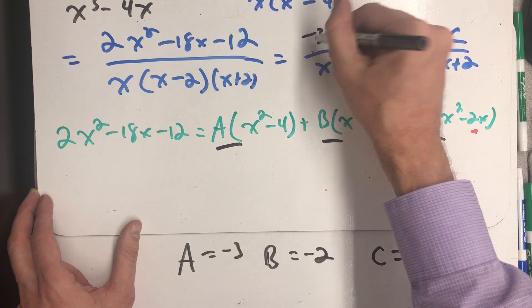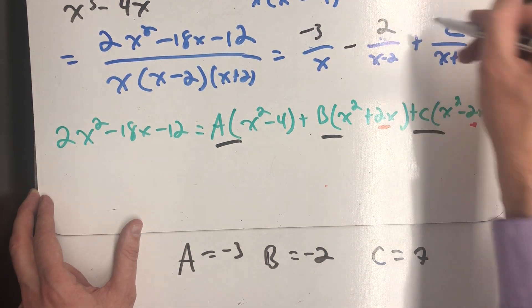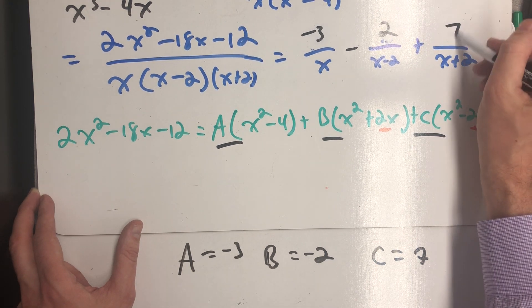A is minus three, B is minus two, and finally C is positive seven.